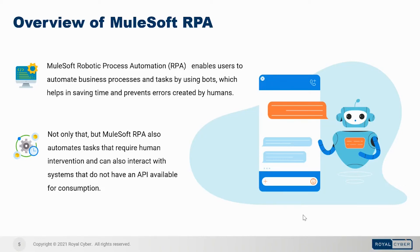MuleSoft RPA enables end-to-end workflow automation across multiple systems, internal and external to Salesforce Customer 360, and can provide intelligent automation capabilities for Einstein Automate. Salesforce admins and developers can build custom end-to-end workflows that automate routine tasks and make employees more productive. In Service Cloud, companies can scale customer service by automating embedded processes in chatbots to guide customers step-by-step, while call center agents automate repetitive tasks such as lookups and write-ins across legacy systems that lack APIs.